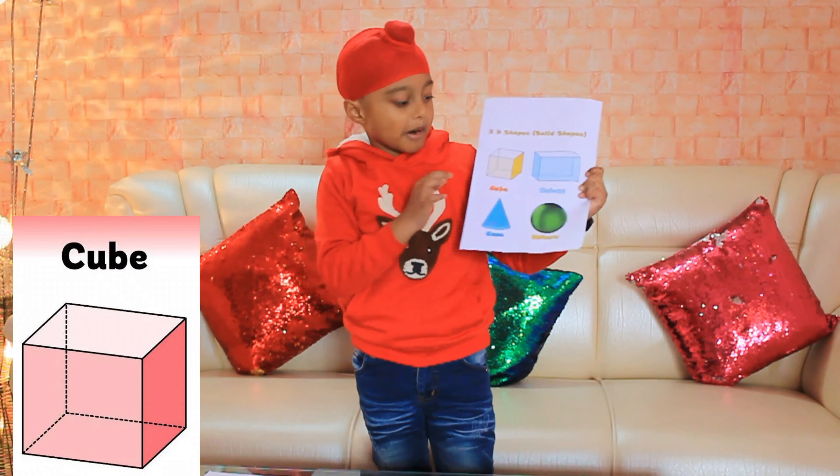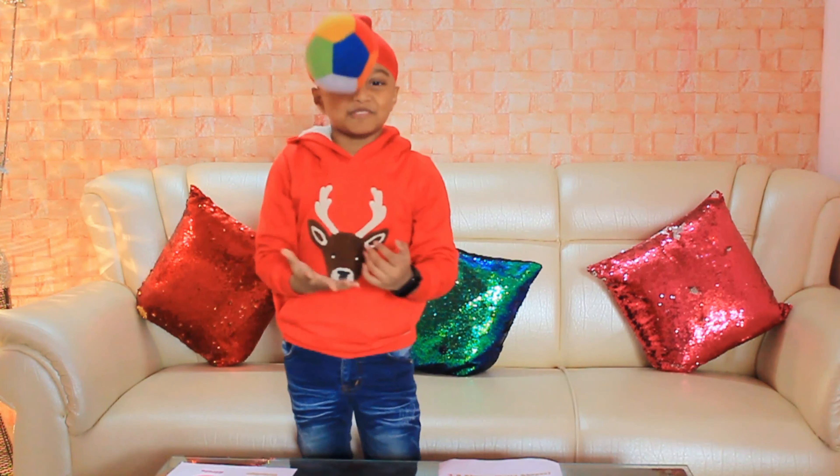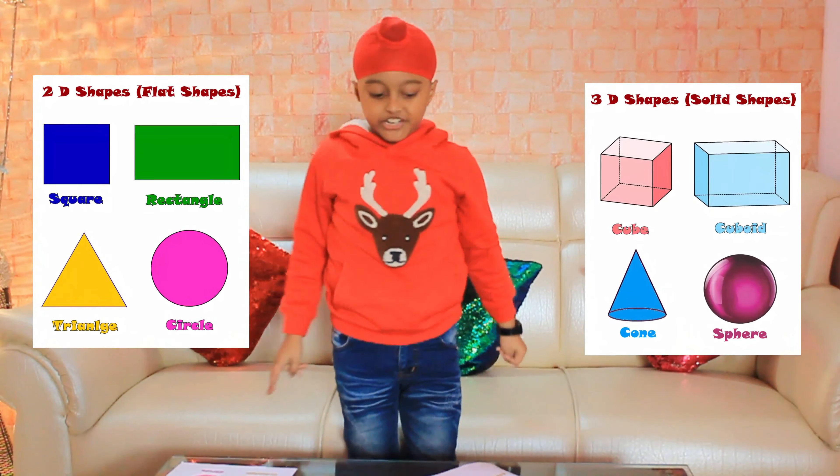And the last shape is sphere. It has one curved face, zero flat faces, and zero edges. Now let me show you an example — a ball. Look, if we have a curved face and zero everything, then it rolls and rolls and doesn't stand on anything. It only stands when it stops. I hope you all now know about 2D shapes and 3D shapes. Bye bye!